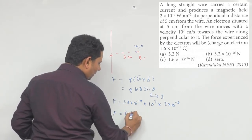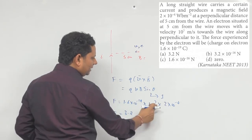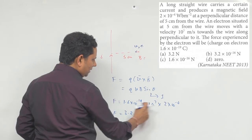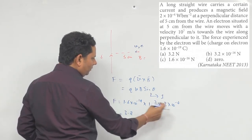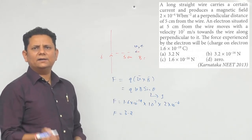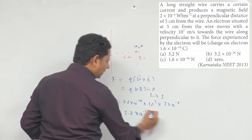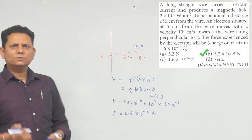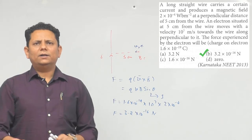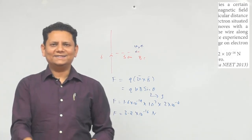So the force comes out to be 3.2, and for the power: minus 19 plus 7 gives minus 12, and adding minus 4 gives minus 16. So the force is 3.2 into 10 to the power minus 16 Newton. This would be the right answer, so option B — 3.2 into 10 to the power minus 16 Newton — is the correct answer.